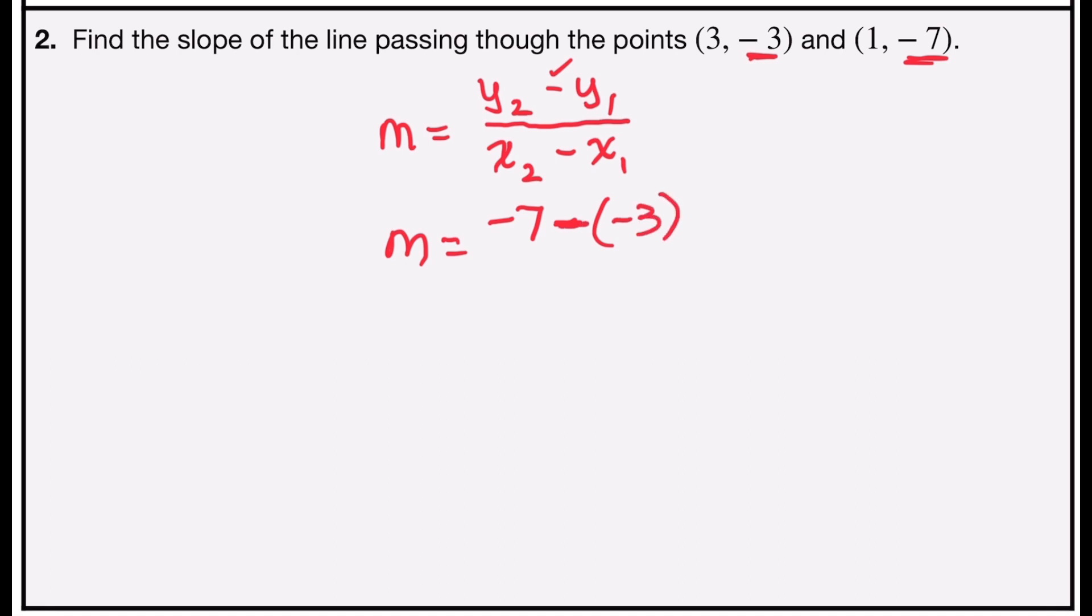Anytime I have the opposite of a negative, or dash dash, dash dash means plus. So the numerator is actually going to be -7 plus 3.